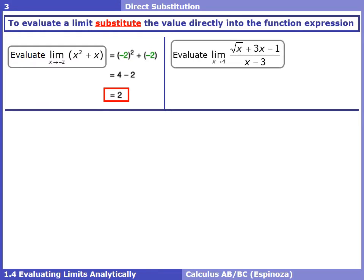In this next example, which would be much harder to graph, we want the limit as x approaches 4 of a more complex expression. Luckily, with direct substitution, it's a very easy process: take x = 4 and plug it in. Computing that arithmetic gives a value of 13 — meaning if we graphed the function, our fingers approaching x = 4 would converge on a y value of 13.